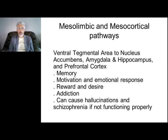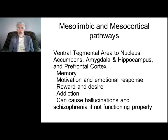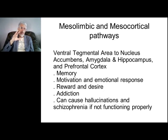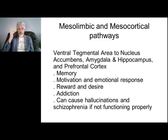This picture explains more exactly what the mesolimbic and mesocortical pathways are and which areas of the brain they connect. The pathway goes from the tegmental area to the nucleus accumbens, amygdala, and hippocampus. This pathway integrates our cognitions, our animal instincts, and our emotions — what is good, what is bad. This pathway has a very high role in mental diseases.